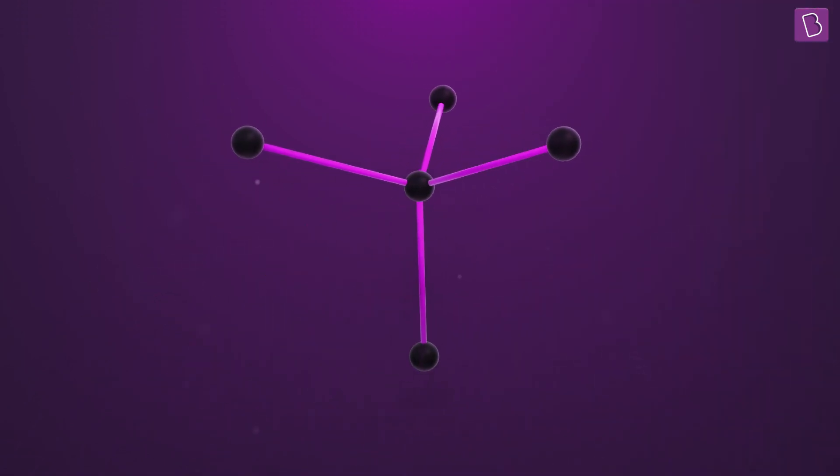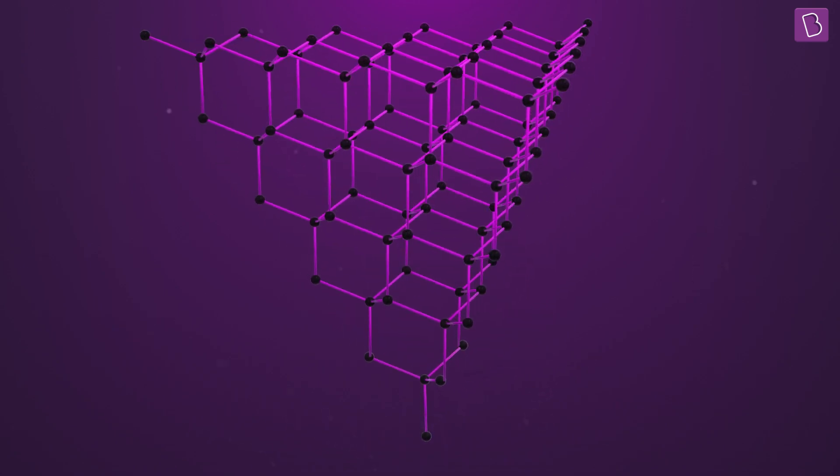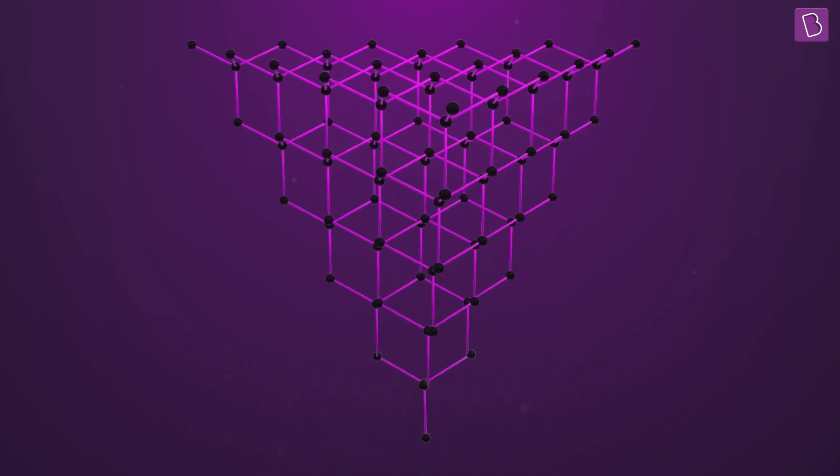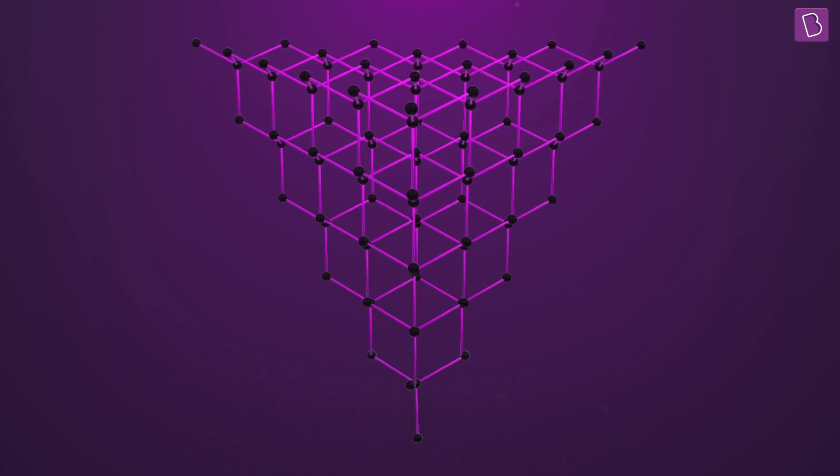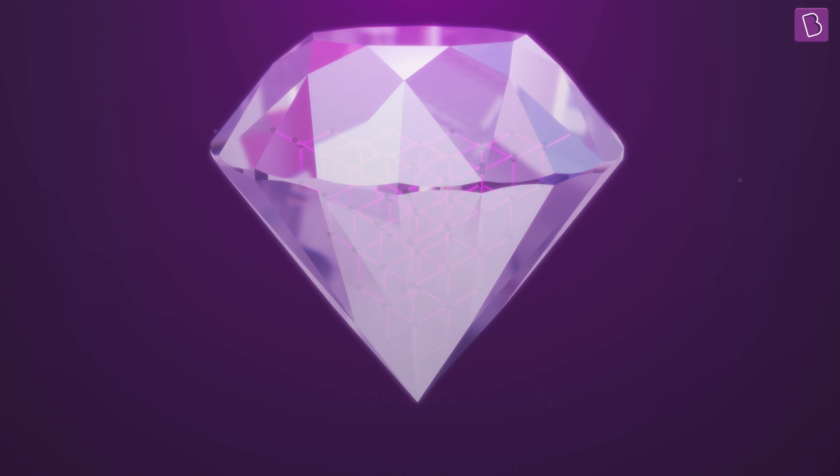As this carbon unit repeats itself in all directions, it forms multiple layers of an interlocked three-dimensional network of carbon atoms, which appears as a diamond.